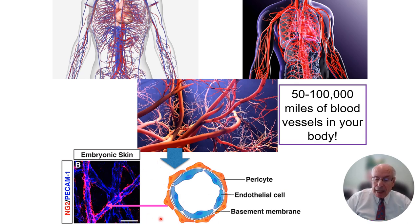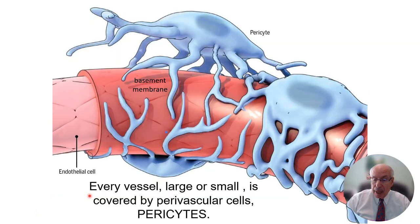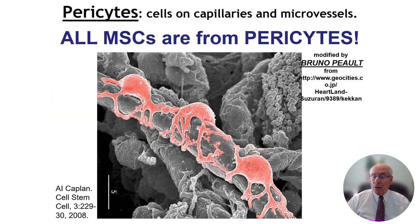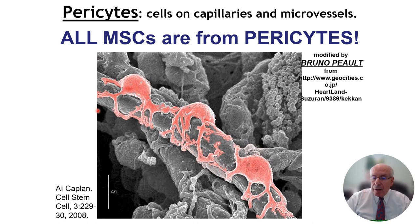We have stains for perivascular cells. These perivascular cells sit on and in the basement membrane surrounding blood vessels, whether large or small. Here's a capillary in heart, where my colleague Bruno Pio colored these cells red to emphasize them. They're pericytes, and they give rise to MSCs.